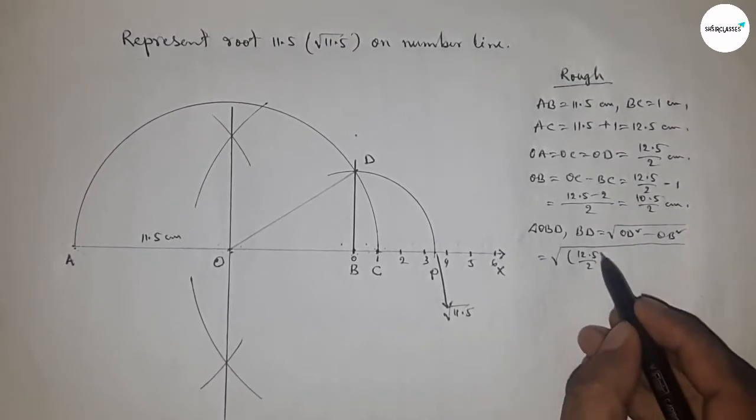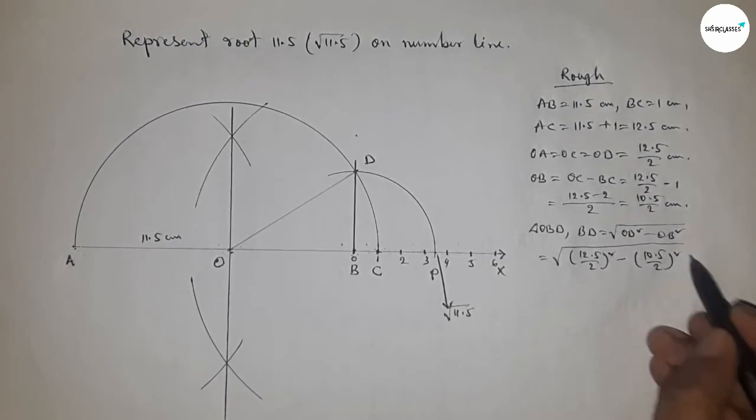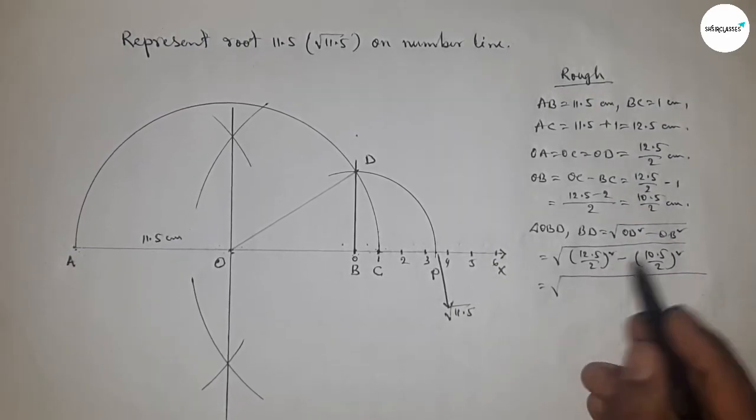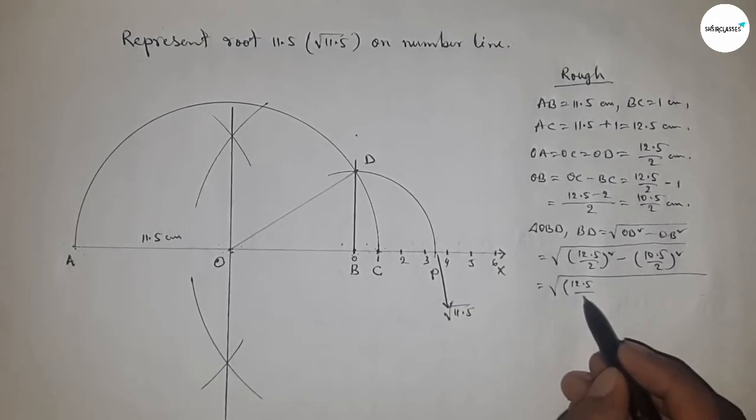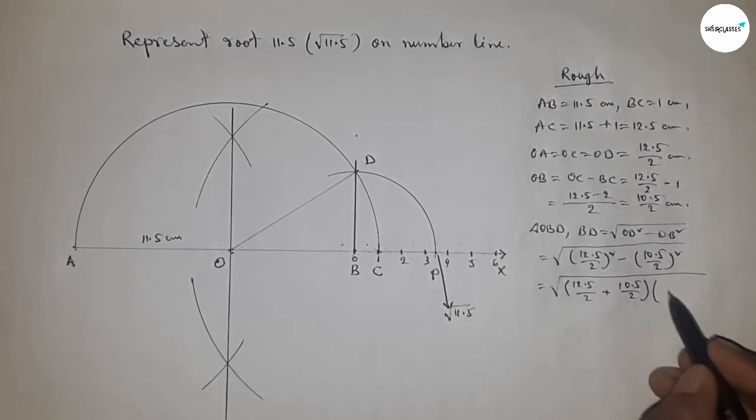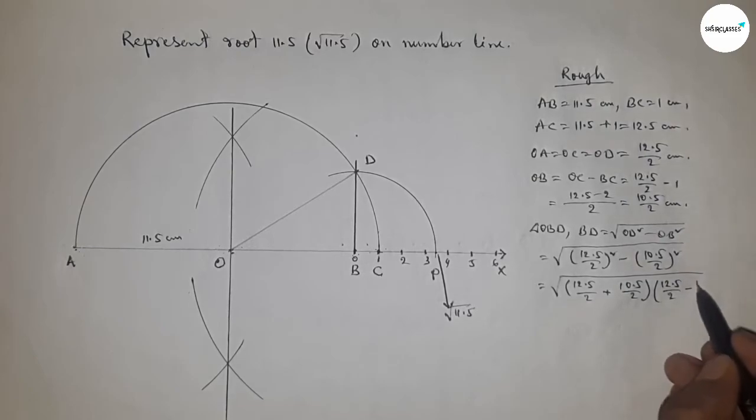Next, I'm going to use the formula a squared minus b squared equals (a plus b) times (a minus b). So applying the formula here.